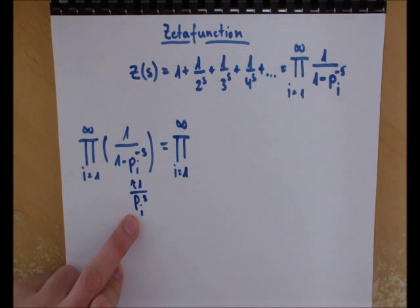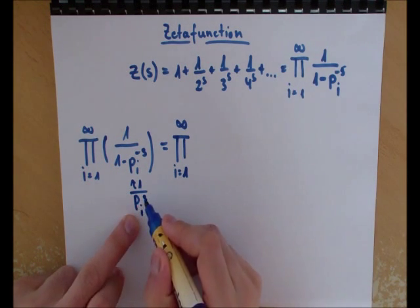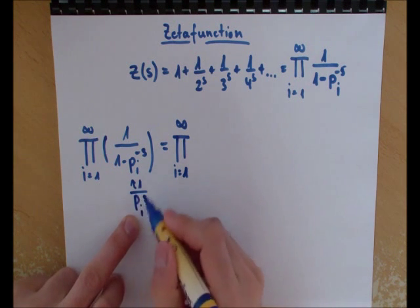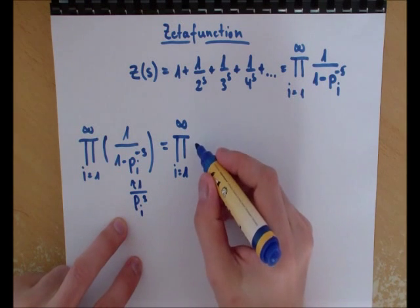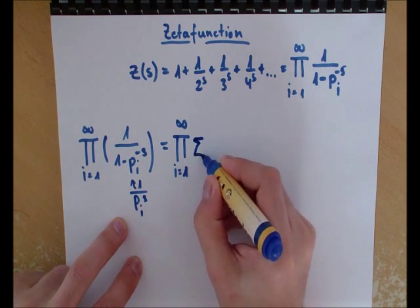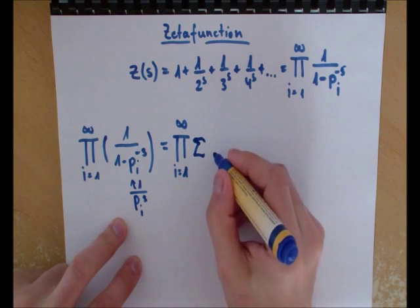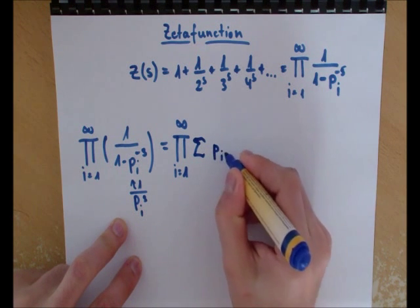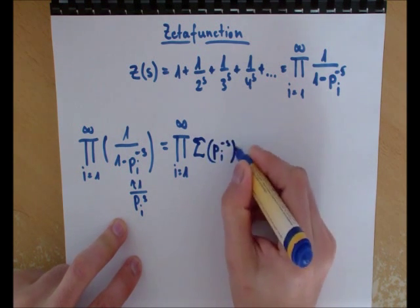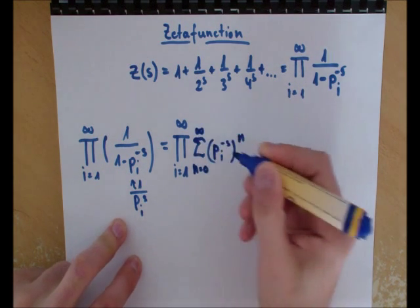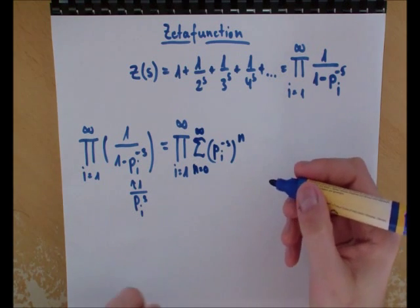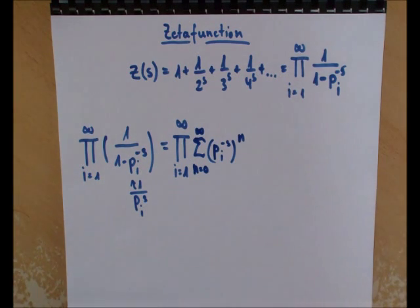This means we have a number that's pretty small, or better, is smaller than 1, and this is important. So we can rewrite this as a geometric series which looks like this: sum from n=0 to infinity of (p_i^(-s))^n.